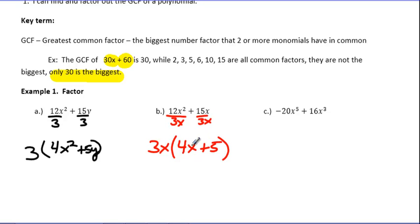What we're doing is the opposite of distributing. It's important to know because you can always check yourself to make sure it's right by going back and distributing that. For example, 3 times 4 is 12x², and then 3 times 5y is 15y. So we know we're right. We can distribute here as well and double check ourselves.